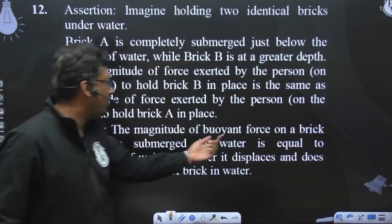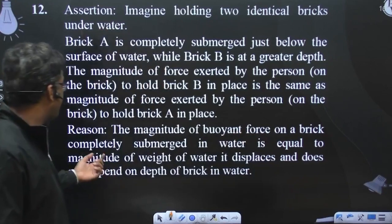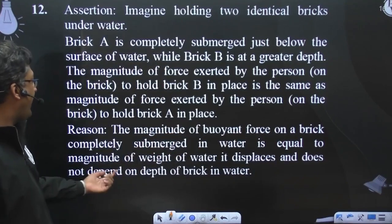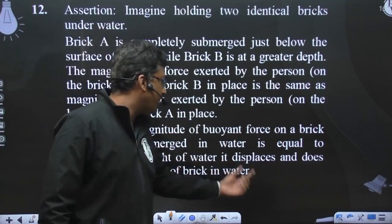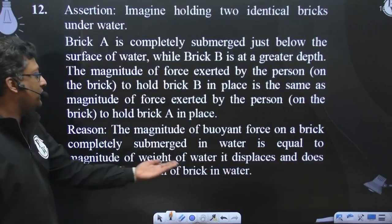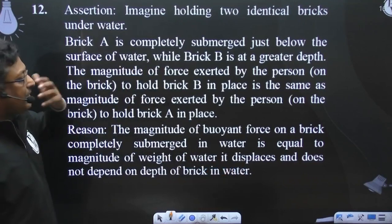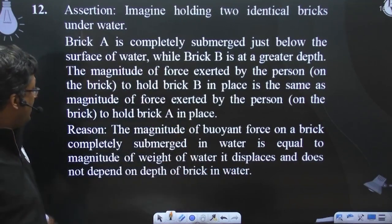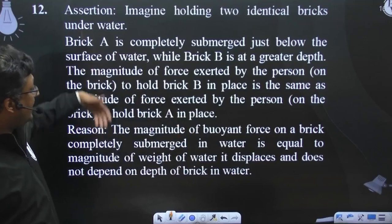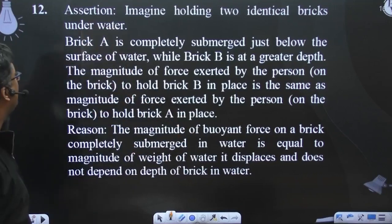The magnitude of buoyant force on a brick completely submerged in water is equal to the magnitude of weight of water it displaces and does not depend on the depth of the brick in water. Absolutely right. So, assertion and reason both are correct statements, and the reason is the correct explanation of the assertion also.